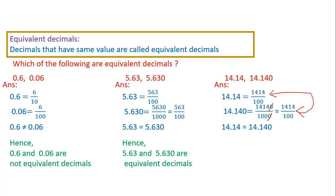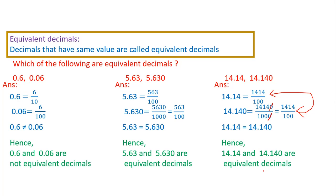Both the fractions have the same value — both are equivalent fractions. Hence the value of 14.14 is equal to 14.140. We will say that 14.14 and 14.140 are equivalent decimals. This is how we identify equivalent decimals.